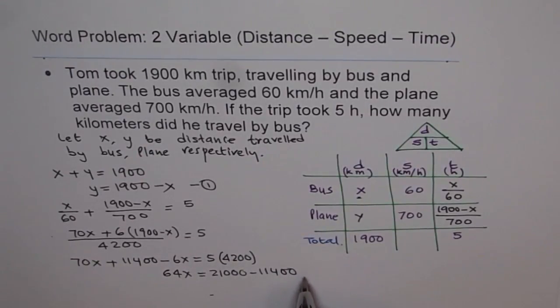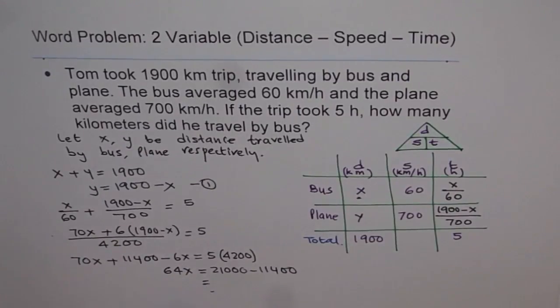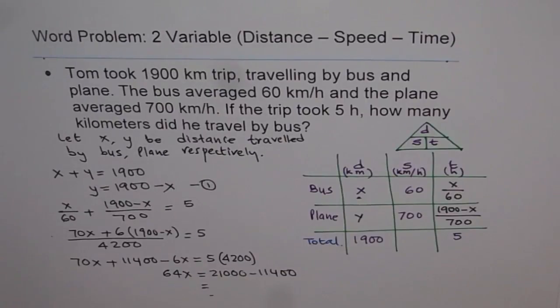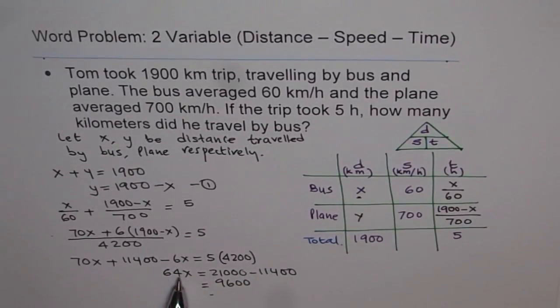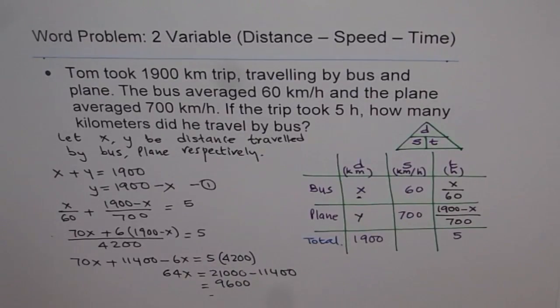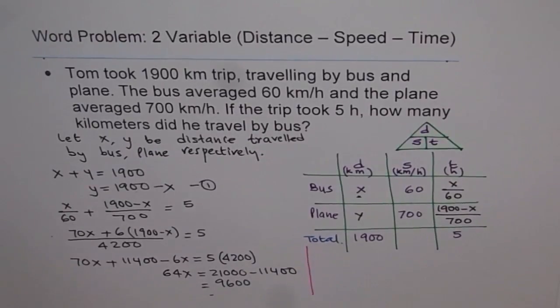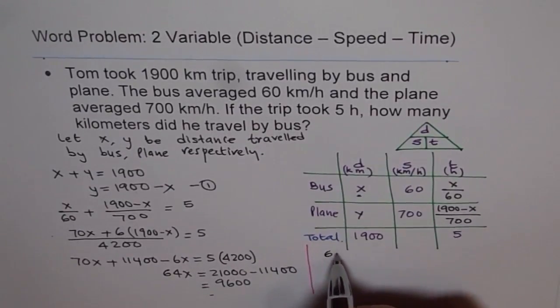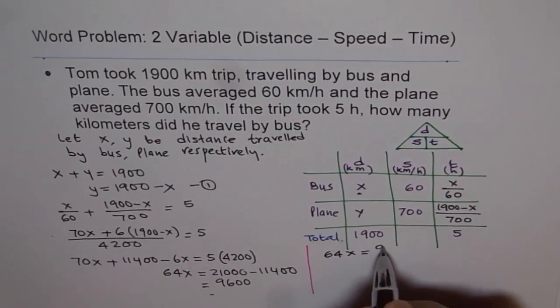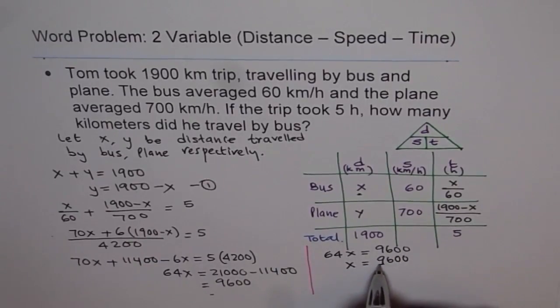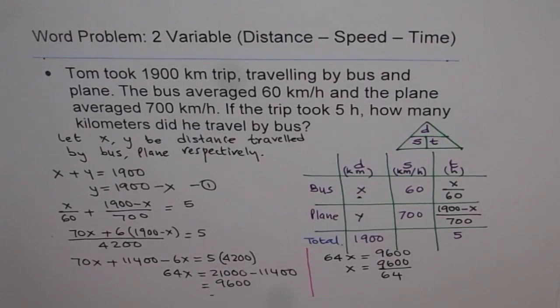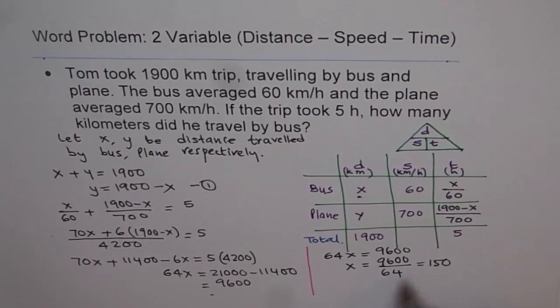And this is equal to, we'll do 21,000 minus 11,400, which is 9,600. So from here, we can calculate what X is. So we have our equation, which is 64X equals 9,600. So from here, X equals 9,600 divided by 64. So 9,600 divided by 64 gives us 150.